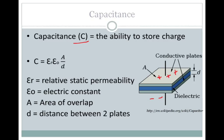In the cell, your capacitor is the cell membrane. The capacitance is determined by this formula, where you have the relative static permeability and the electric constant, which we're just going to assume are constant for our cases. You have A, which is the area of overlap, or the area of your plates or membrane.